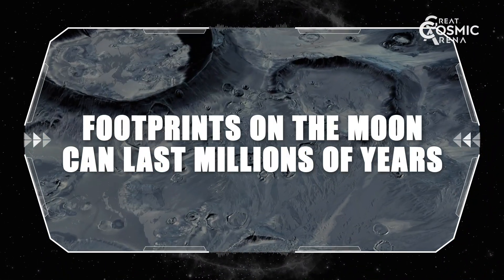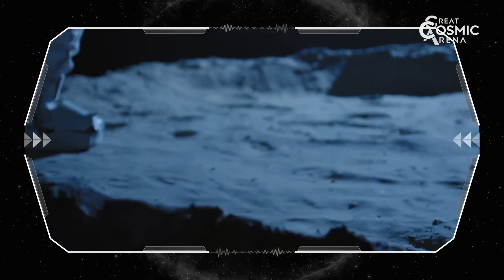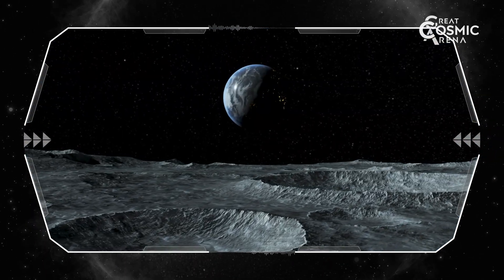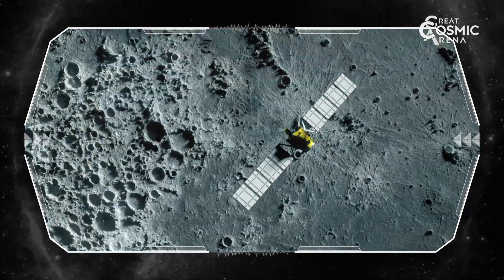Footprints on the moon can last millions of years. Lacking wind and rain, footprints and other disturbances on the moon's surface can remain nearly unchanged for vast time spans.